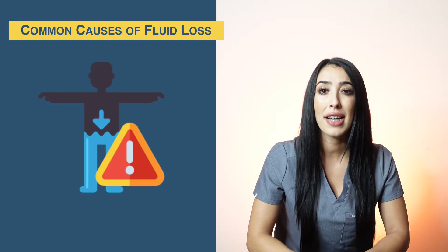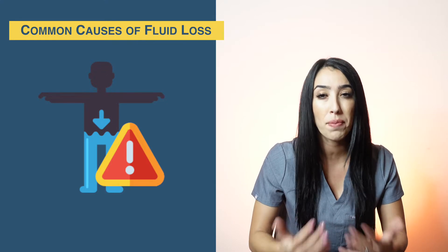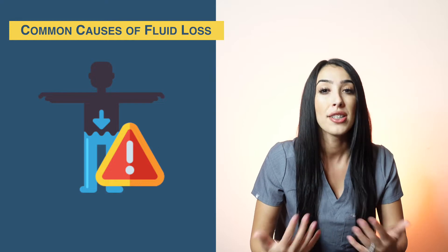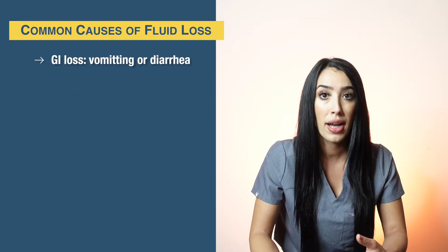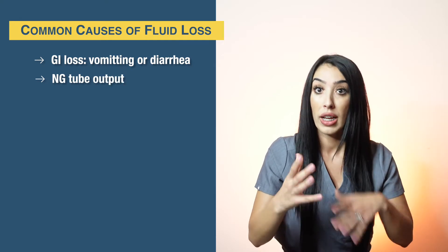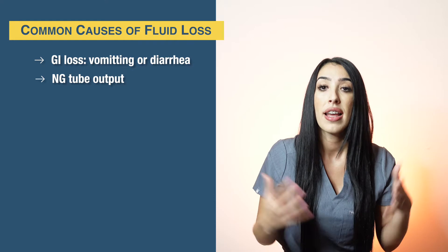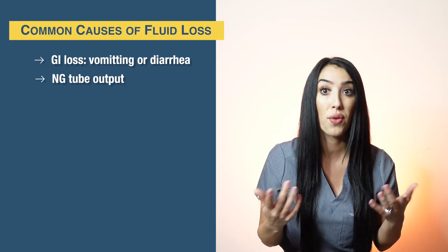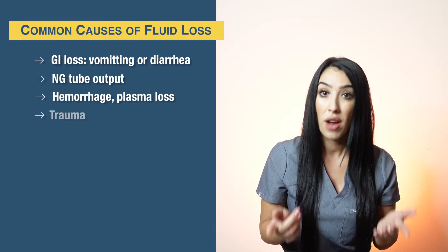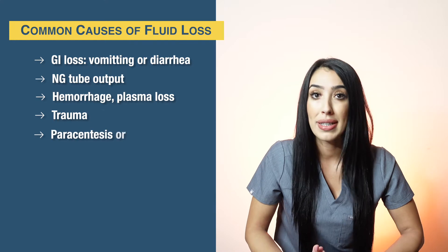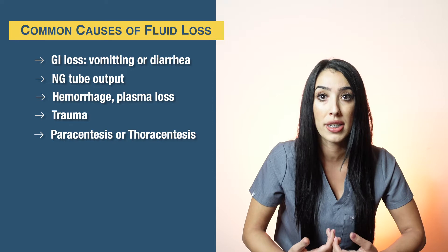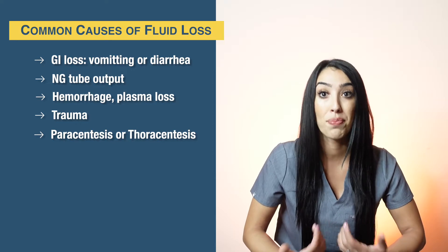Causes of hypovolemia have to do with situations that lead patients to lose fluids. Some causes include GI loss from vomiting or diarrhea, NG tube — for example, if a patient has an NG tube, we can connect it to suction and decompress the stomach, which can also lead the patient into hypovolemia. Other causes include hemorrhage and massive blood and plasma loss, trauma, and various procedures such as paracentesis for liver cirrhosis or thoracentesis for pleural effusions.